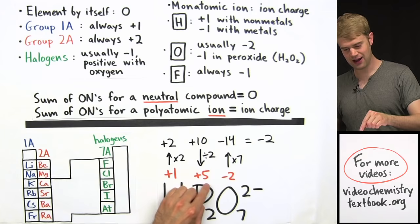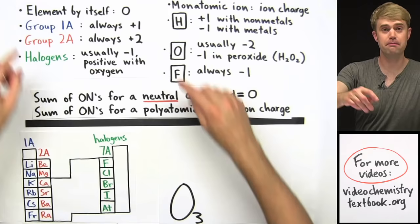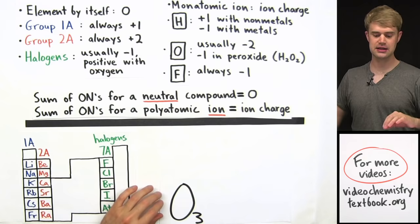O3 is an element by itself — it's just oxygen not combined with any other elements — which means that its oxidation number is zero.